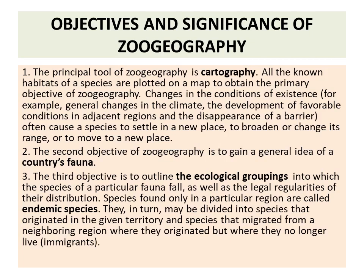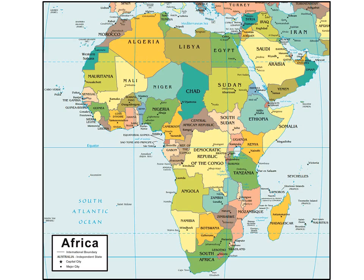Species found only in a particular region are known as endemic species. This is the map showing the various countries in the Ethiopian realm: Morocco, Algeria, Libya, Egypt, South Arabia, Sudan, Chad, Mali, South Sudan, Ethiopia, Somalia, Congo, Angola, Zambia, Tanzania, Namibia, South Africa, and Madagascar. These are the various countries present in the Ethiopian realm.